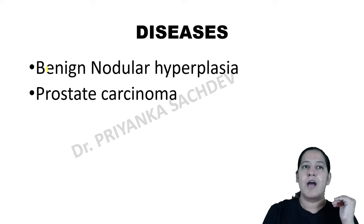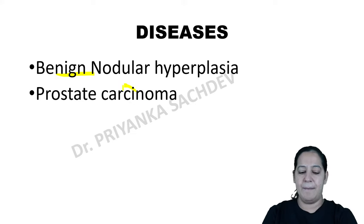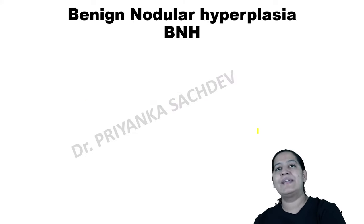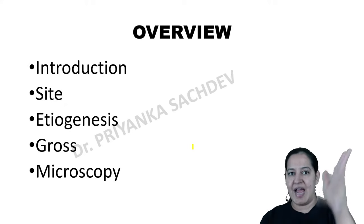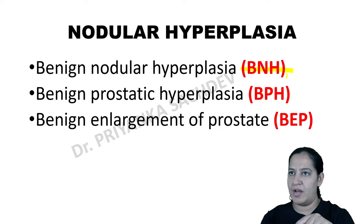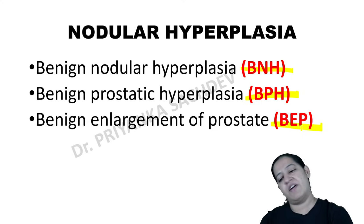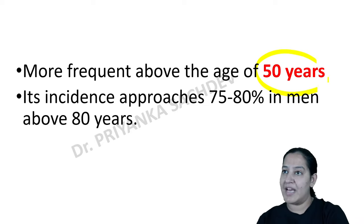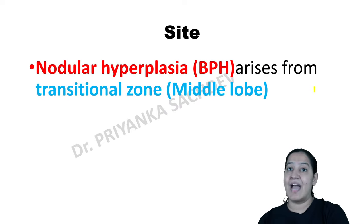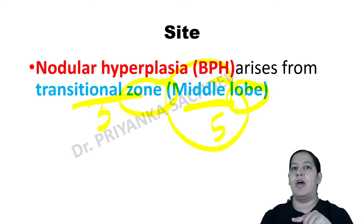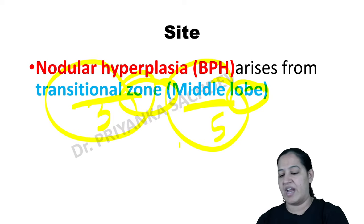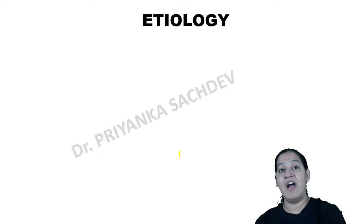Let me make a comparative table between BPH (benign nodular hyperplasia) and prostatic carcinoma. BPH is also called benign prostatic hyperplasia or benign enlargement of the prostate. The most common age is 50 years. Most common site among lobes is the middle lobe; among zones it is the transitional zone. Never forget this. Now, why does BPH occur? Let's look at the etiology.